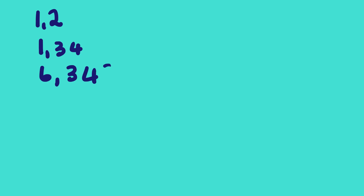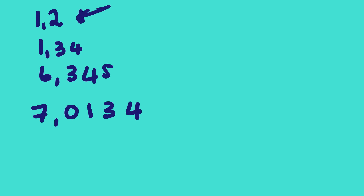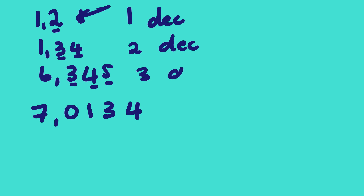In high school you've learned about how to round off — those are the decimal places. When we talk about decimal places, it involves the decimal point. For example: 1.2, 1.34, 6.345, 7.0134. The first number has one number after the comma, so that is one decimal place. The second has two numbers, so it is two decimal places. The third has three numbers — three decimal places — and the fourth has four numbers, so that is four decimal places.